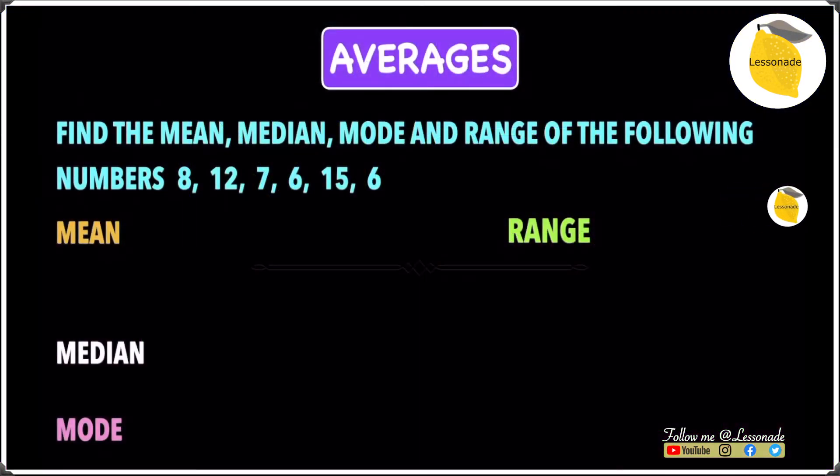Now let's have a look at averages, and we're going to look at the mean, the median, the mode, and range. The question we have is: find the mean, the median, the mode, and range of the following numbers, which are 8, 12, 7, 6, 15, and 6.